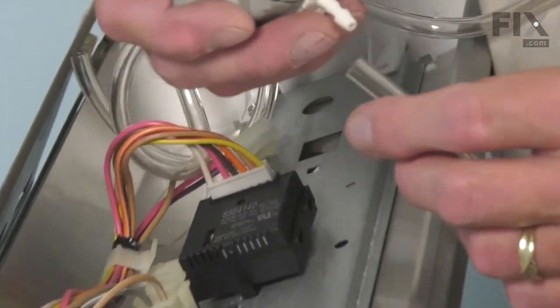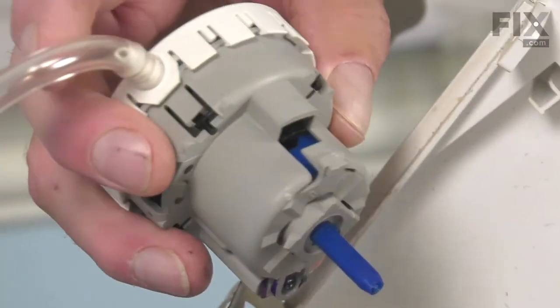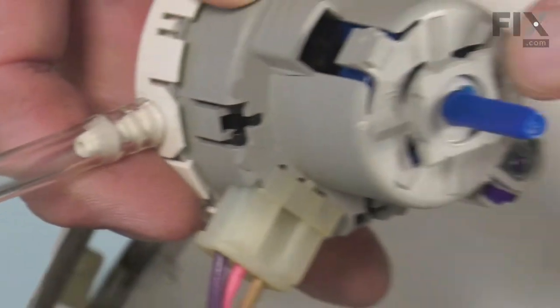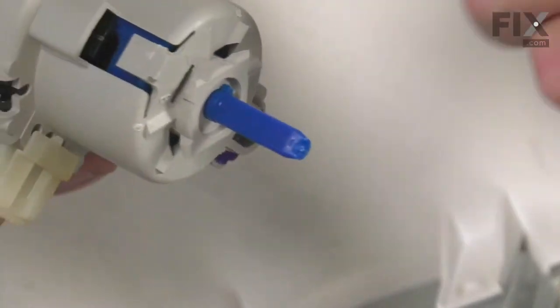We'll insert one end of that onto the new water level control. Make sure it's pressed all the way on. We can reconnect the wire harness. Make sure the locking tab engages. Then you'll note that there is a square portion on the base of that control that we need to line up with the square opening. In doing so, make sure that the locking tab is towards the top of the console. Press it firmly into place. While applying some pressure, rotate it clockwise until that locking tab drops into place.